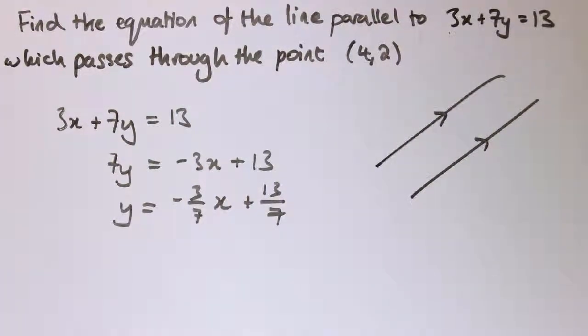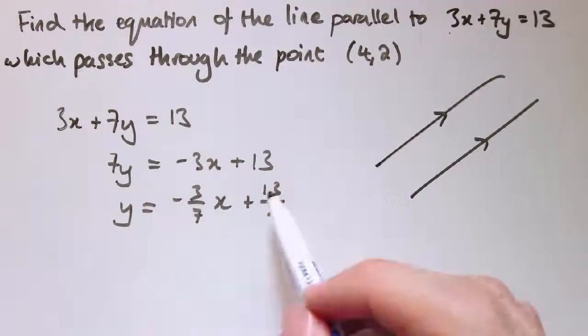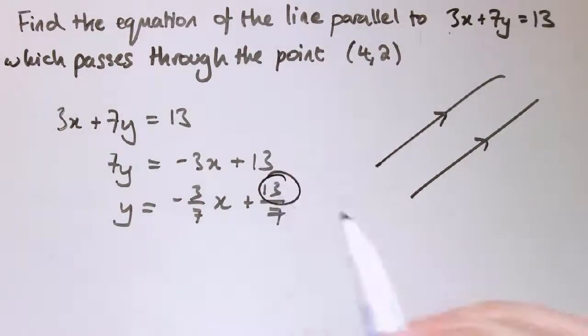So actually, I could just change the value 13 and I could get any y-intercept I want, even though it's all divided by 7 as well, I can just change this to any value I want to get a different y-intercept. Now, if we already had the equation in this form, to solve this I could say the line I'm looking for is going to be y equals minus 3/7 x plus c.